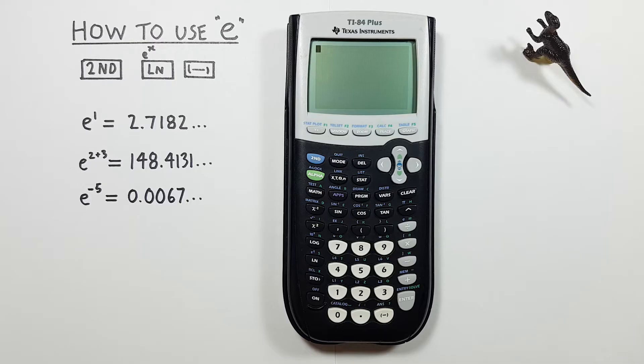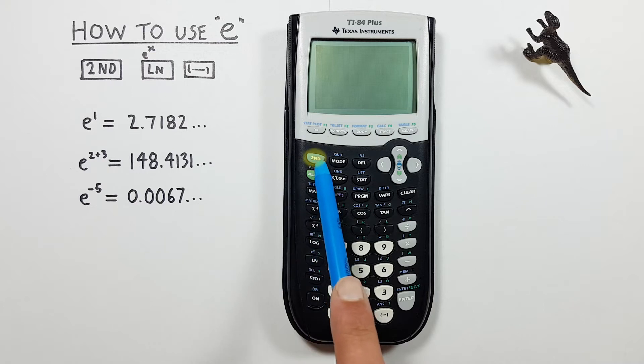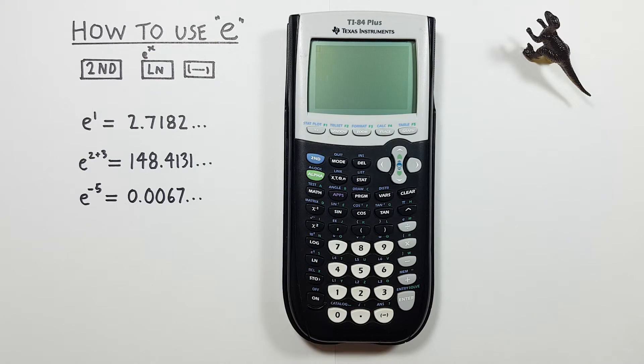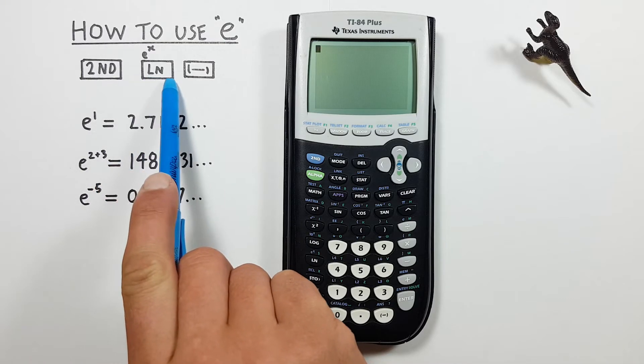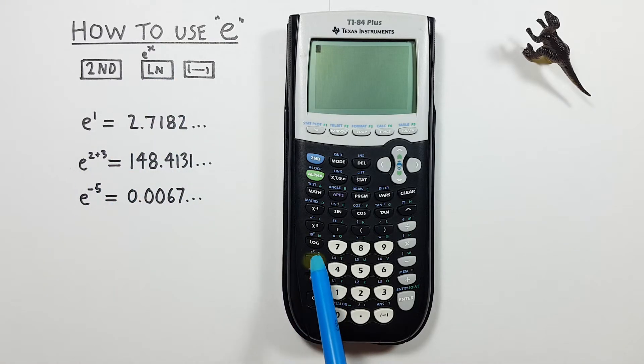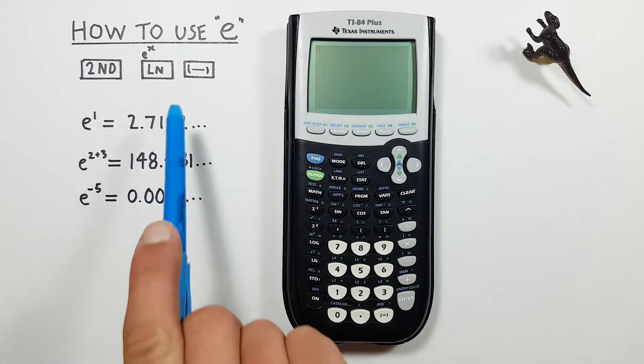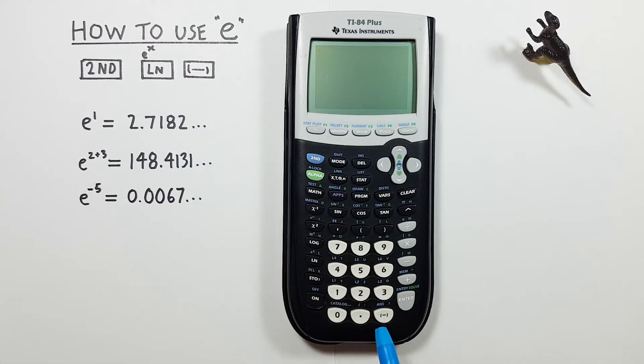To do this we'll use the second function key that looks like this, located here, the ln key with the second function of e to the power of x that looks like this, located here, and the negative key that looks like this, located here.